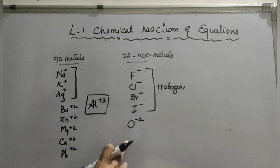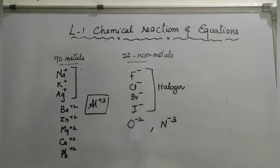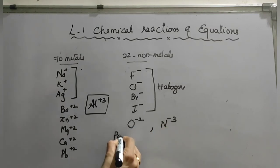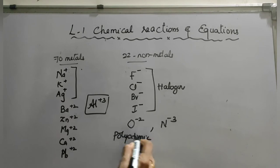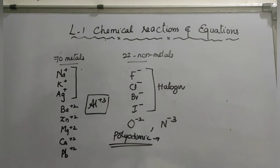Oxygen forms the oxide ion, and nitrogen forms the nitride ion at minus three. Next, polyatomic ions — we studied these in 9th standard, so we are revising. A polyatomic ion means more than one atom carries a single charge. Polyatomic ions also have minus one, minus two, and minus three states.